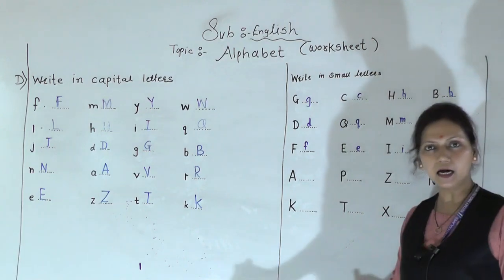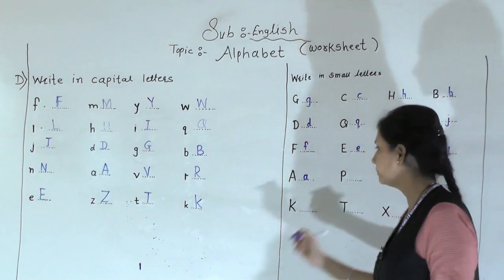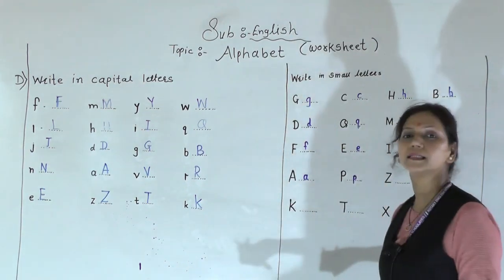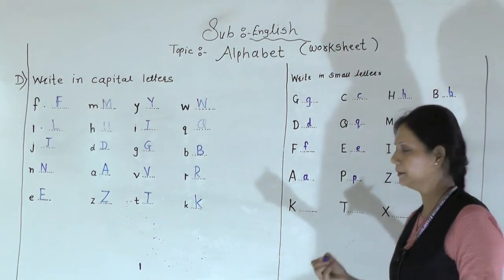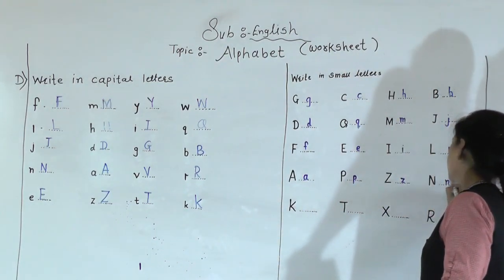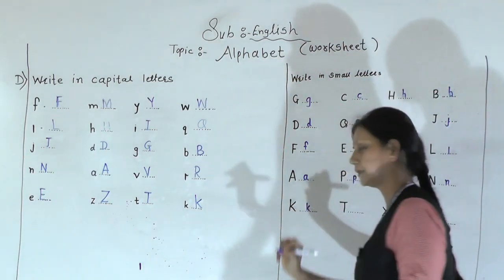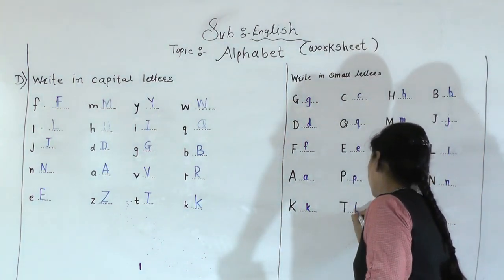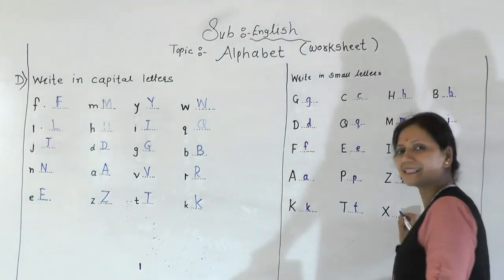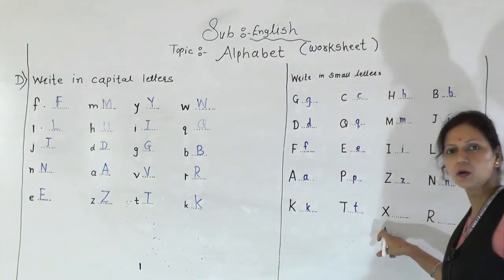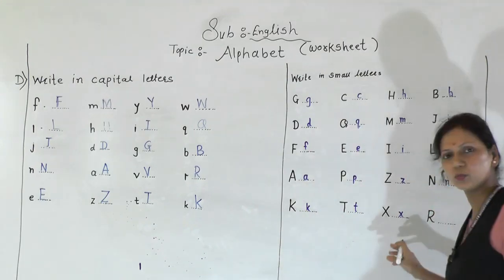L. Then small A. Then P. Small Z. Then N, small N. Then again K, small K. Then T sound, small T. X, what is this? Which sound? X. And the last one is R.